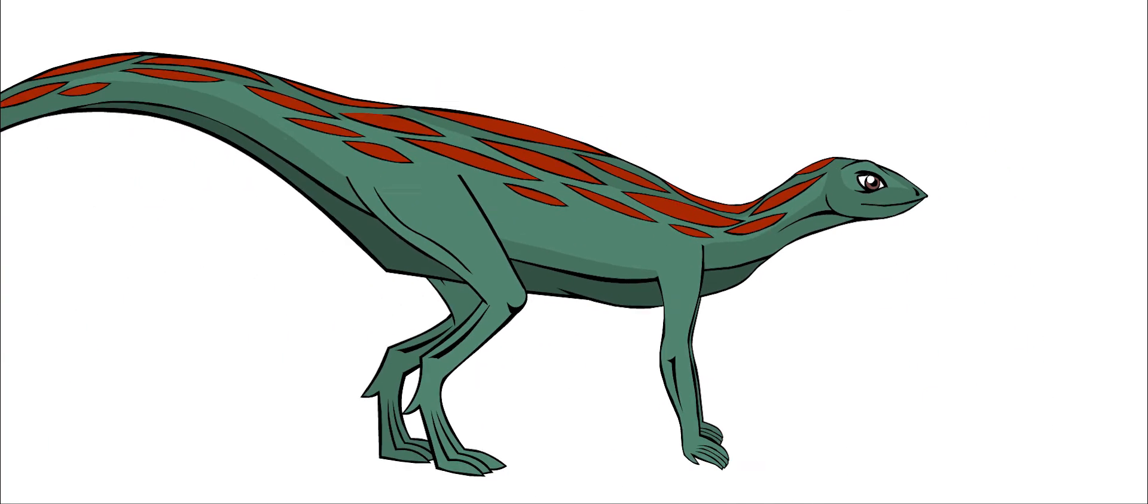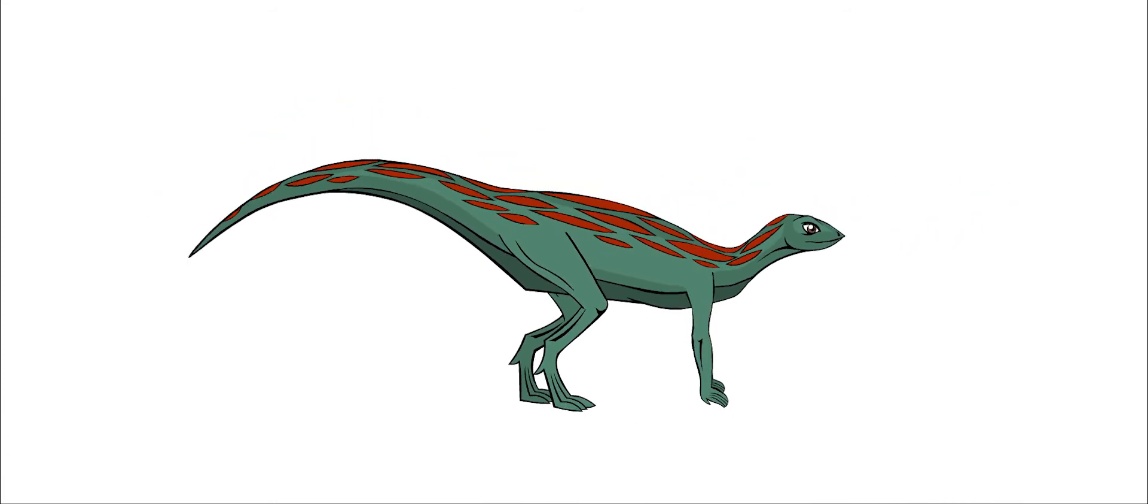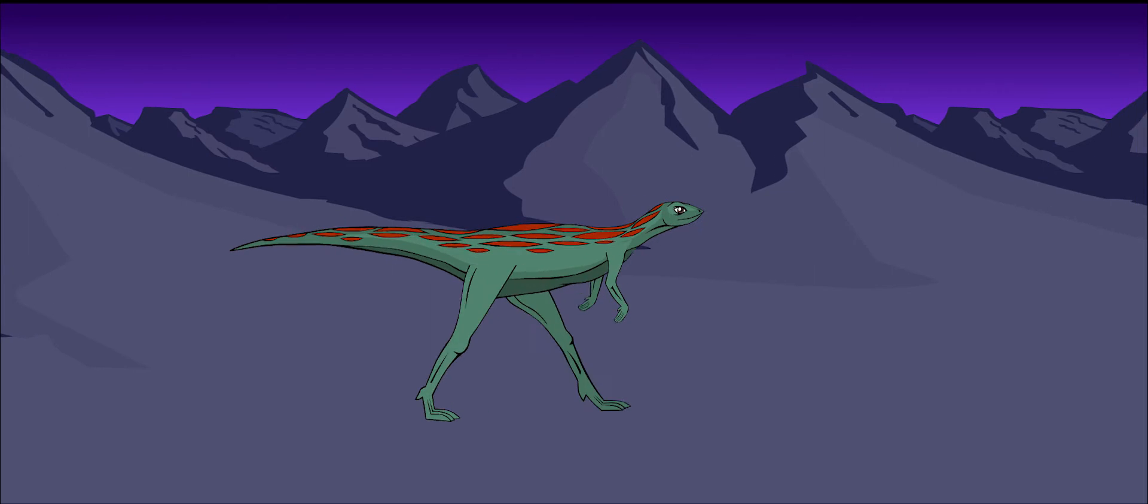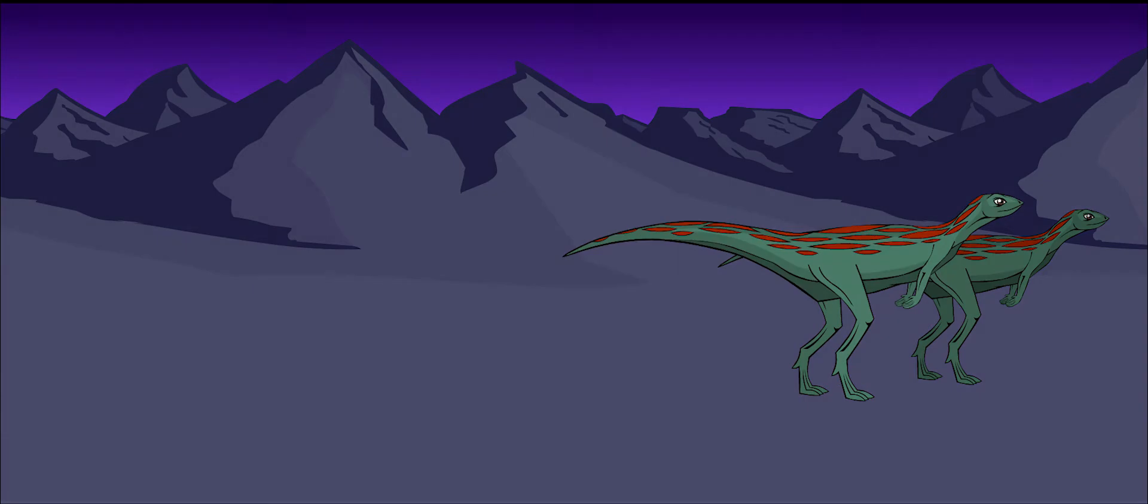Lesotosaurus had a long, curving neck and a small head. It had a short, flat snout and large eyes, so we believe that it was able to see very well. Some paleontologists even believe that its large eyes let this dinosaur see well at night.